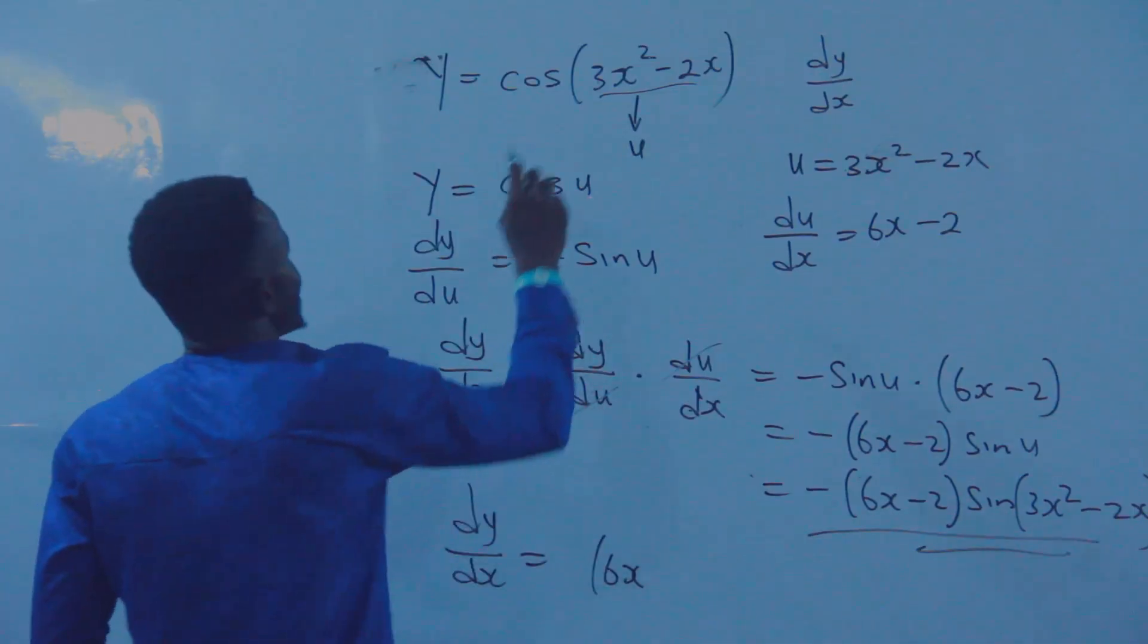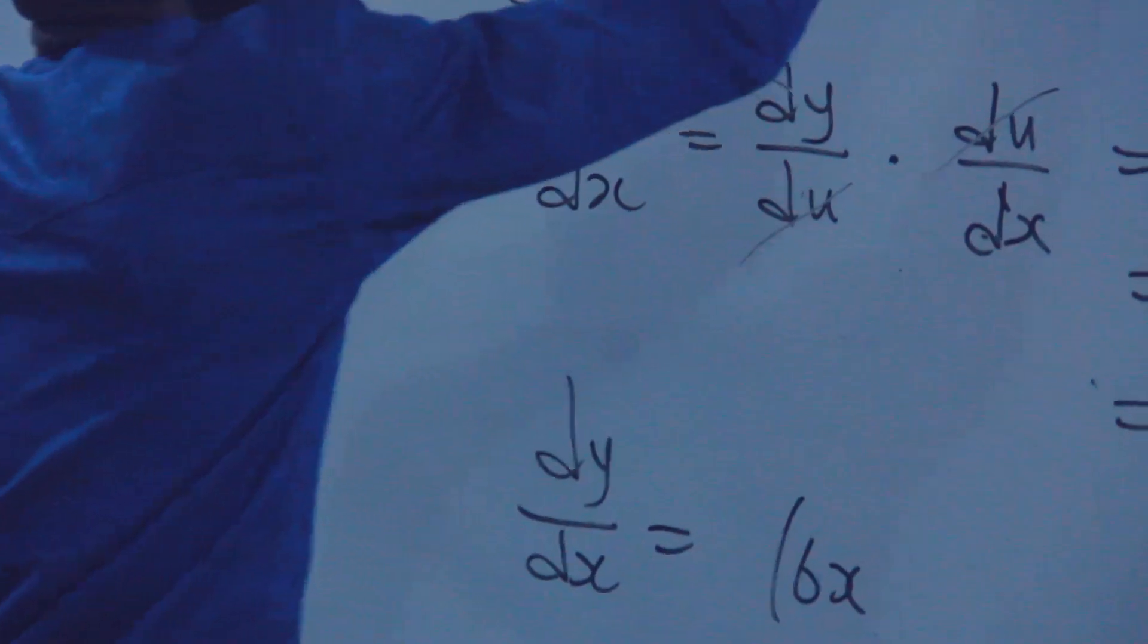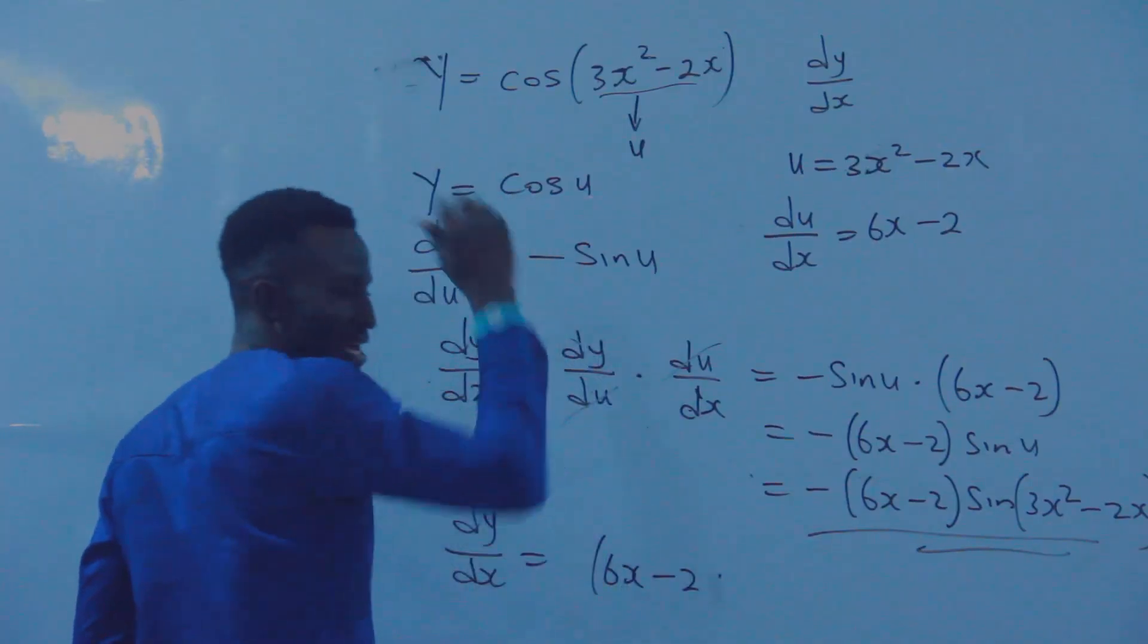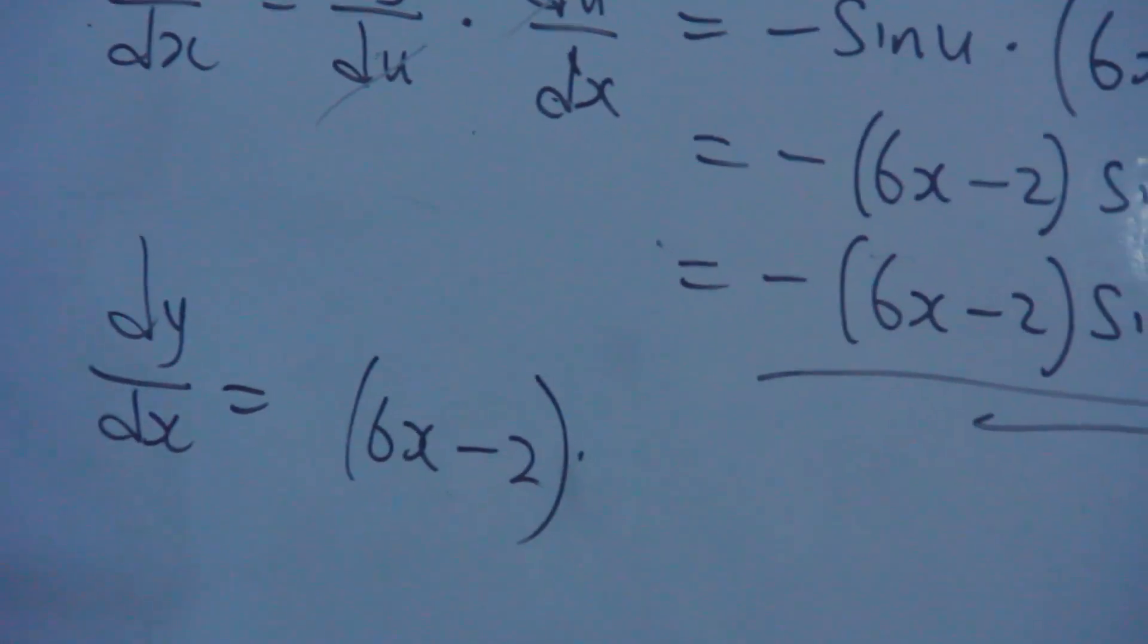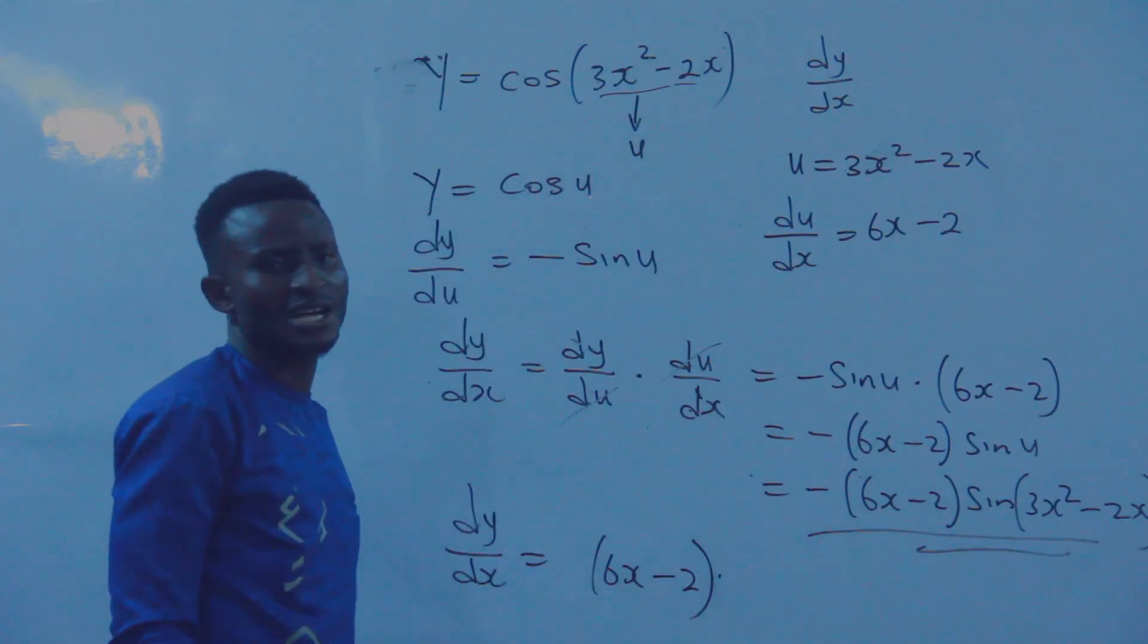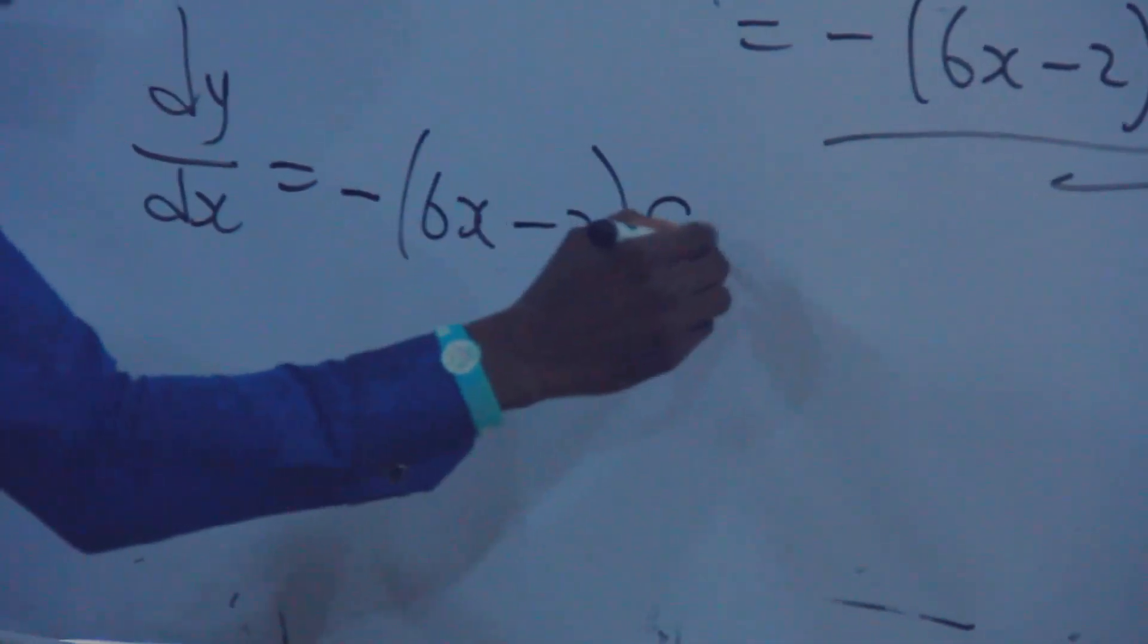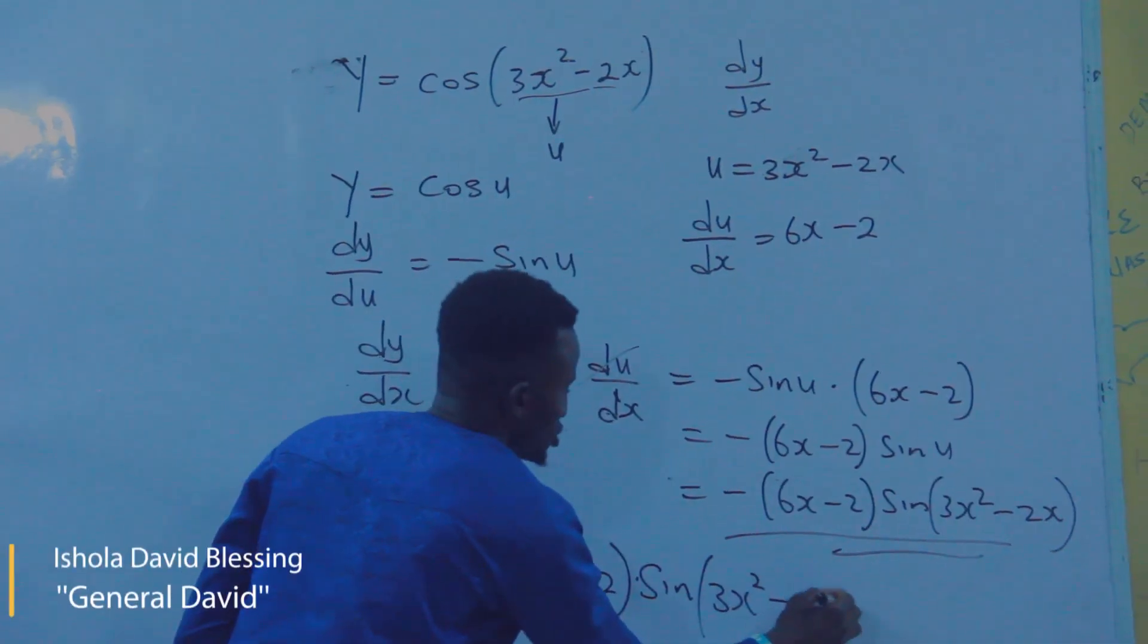When I differentiate, that's 2 times 3, equals 6, then X raised to the power 2 minus 1, that's 1. Then 1 times minus 2, that's minus 2, then X raised to the power 1 minus 1 makes the X leave the equation. That is the differentiation of this. What's the differentiation of cosine? Our differentiation of cosine is minus sine. I will now have it to be minus sine of everything here, which is 3X squared minus 2X.